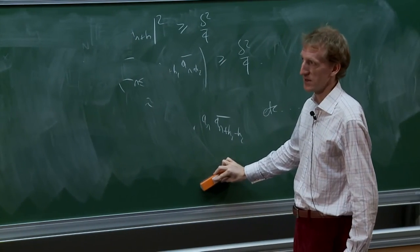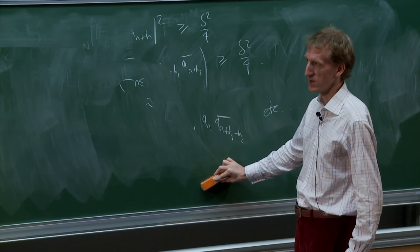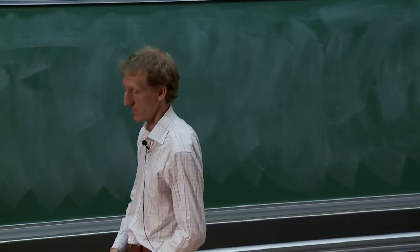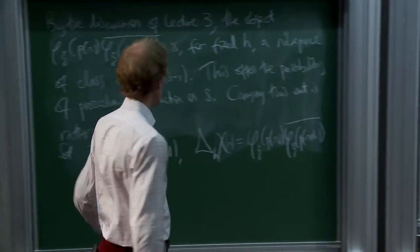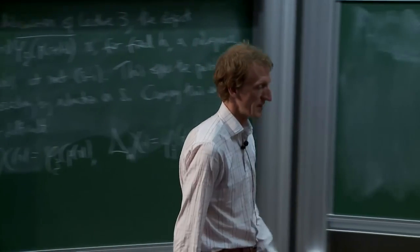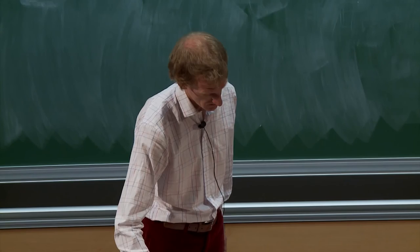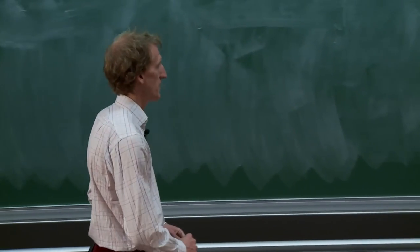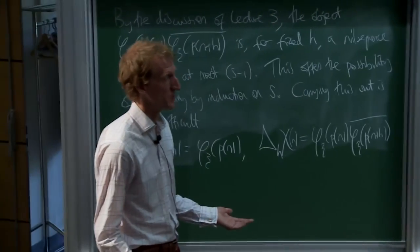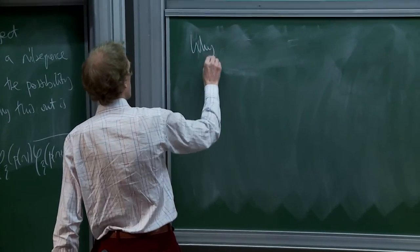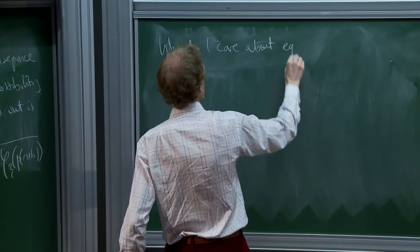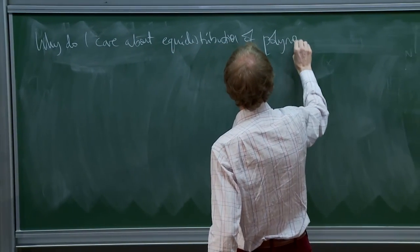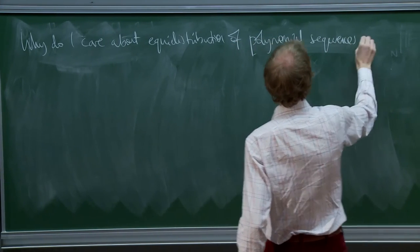This theorem is also needed crucially in showing that the Möbius function is orthogonal to nil sequences — tomorrow I'll be talking a bit about the primes. So it's somehow quite fundamental. Just to finish, I want to say two things about how this is applied: why should I care about equidistribution of nil sequences? Why care about equidistribution of polynomial sequences on G mod gamma?